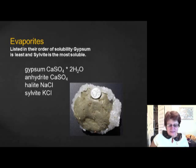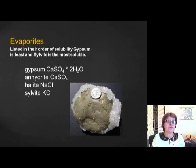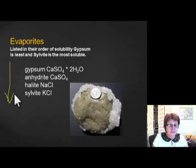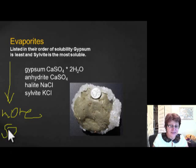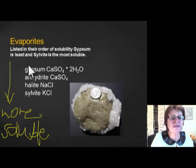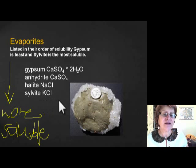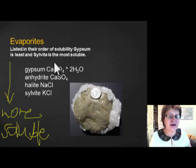Evaporites form in extreme arid environments and their formation is defined by solubility — how easily a mineral dissolves in water. The order from least to most soluble is: gypsum, anhydrite, halite (salt), and potassium salt. Gypsum is the least soluble and crystallizes first; potassium salt is most soluble and crystallizes last. You don't need to memorize the formulas, but that solubility order is important.